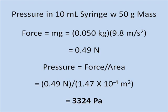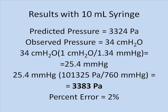We can calculate the pressure that develops in the syringe beginning with Newton's second law. The force exerted by 50 grams of mass multiplied by the acceleration of gravity gives us 0.49 newtons. Pressure is equal to force divided by area, and if we divide 0.49 newtons by 1.47 times 10 to the minus 4th square meters, the pressure in the syringe is equal to 3,324 pascals. We observed 34 centimeters of water, which after applying conversion factors equals 3,383 pascals — only a 2% error from what is theoretically predicted.